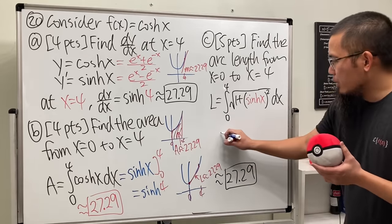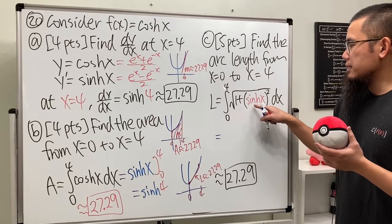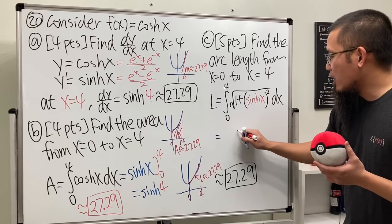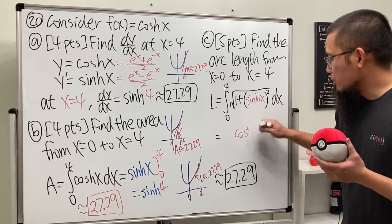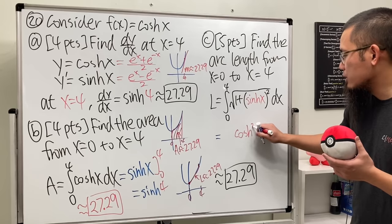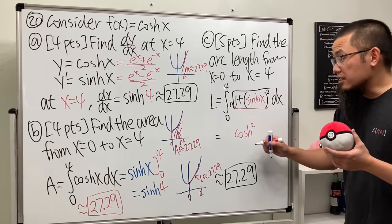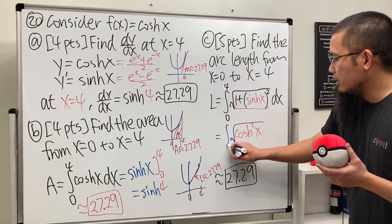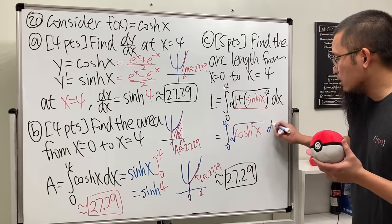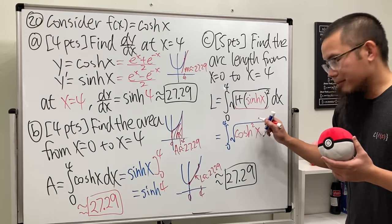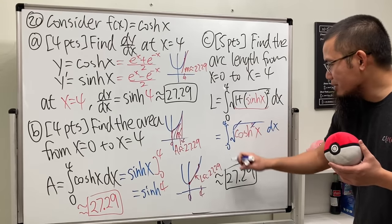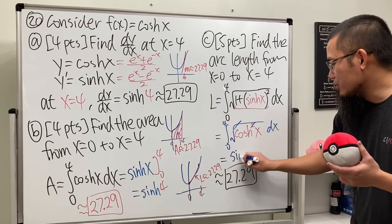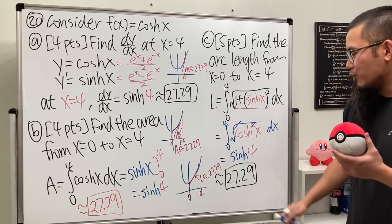Let me show you. The reason is because when you have 1 plus sinh squared, this is actually the same as cosh squared of x, and then of course we have the square root, and then we integrate from 0 to 4. And you know it—this and that cancel, so it's the same exact integral, and you end up with sinh(4), and of course you end up with this.